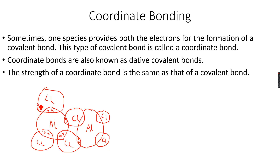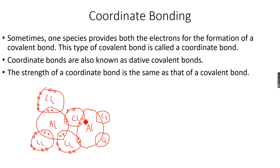Now showing the lone pairs on the chlorine atoms so that it's more clear. I forgot to make them on this one — these are all the lone pairs. You can see that each chlorine atom had three lone pairs after bonding with the aluminium.